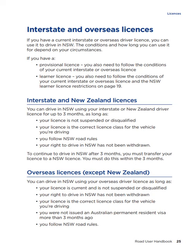Interstate and overseas licences. If you have a current interstate or overseas driver's licence, you can use it to drive in NSW. The conditions and how long you can use it for depend on your circumstances. If you have a provisional licence, you also need to follow the conditions of your current interstate or overseas licence. If you have a learner licence, you also need to follow the NSW learner licence restrictions. You can drive in NSW using your interstate or New Zealand driver licence for up to three months, as long as your licence is not suspended or disqualified, is the correct class, you follow NSW road rules, and your right to drive in NSW has not been withdrawn. To continue to drive in NSW after three months, you must transfer your licence to a NSW licence within those three months.